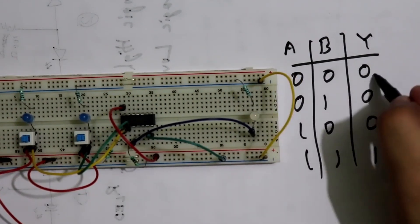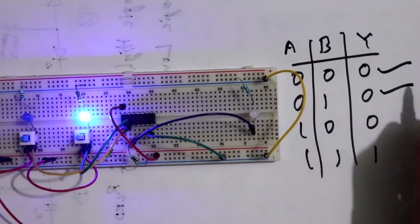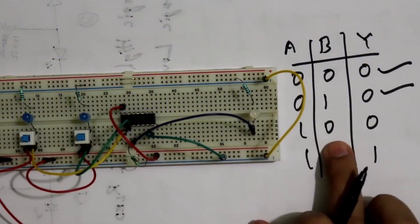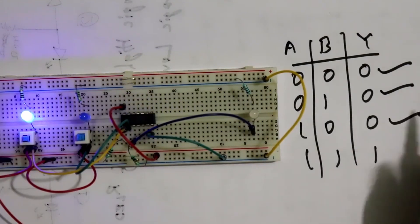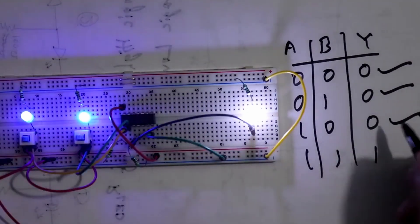Now 0 1. Again 0 here. Now 1 0. Here also 0. Now 1 1. We are getting the output.